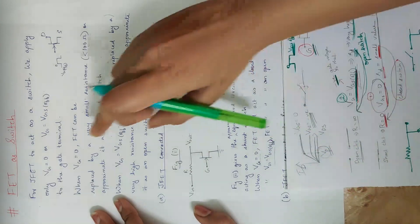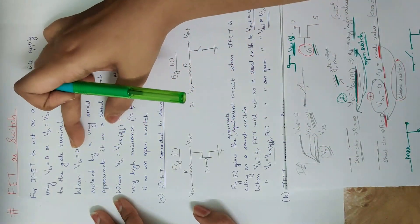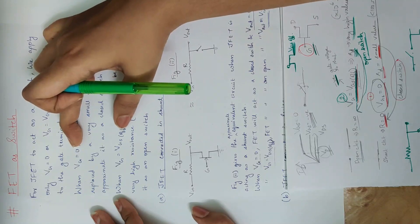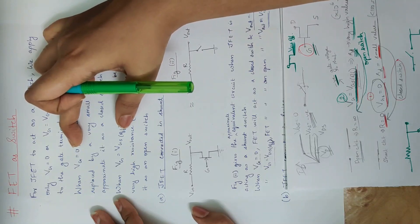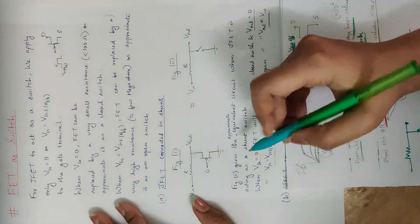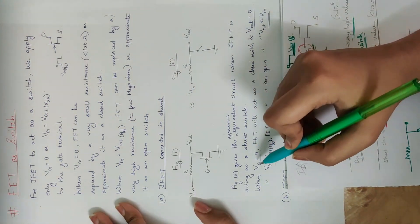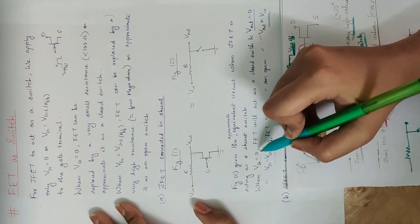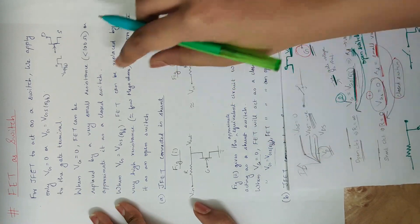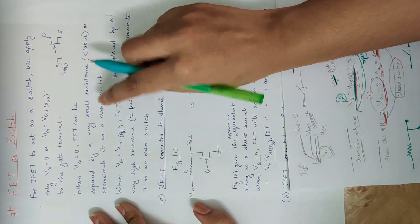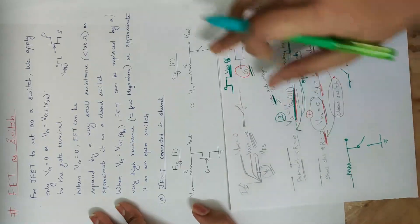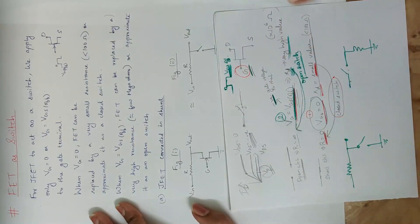We have two conditions: VGS equal to 0 applied, and VGS equal to VGS off applied. If VGS equals 0, FET will act as a closed switch, and the output voltage comes — that is, it goes to 0.